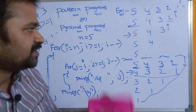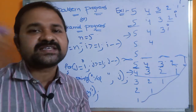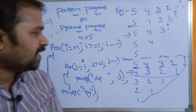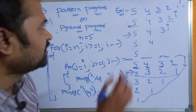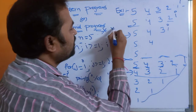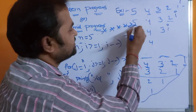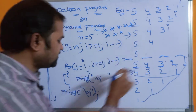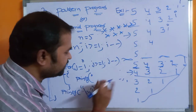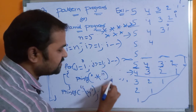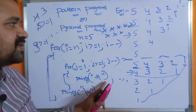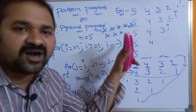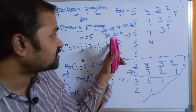In this way we can get the output. In the next video we will discuss more pattern programs or pyramid programs. If you want to display stars instead of numbers — 5 stars, 4 stars, 3 stars, 2 stars, 1 star — then simply replace the %d j with a star character, and you will get the star pattern output.